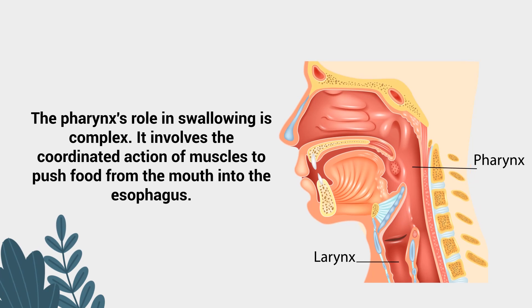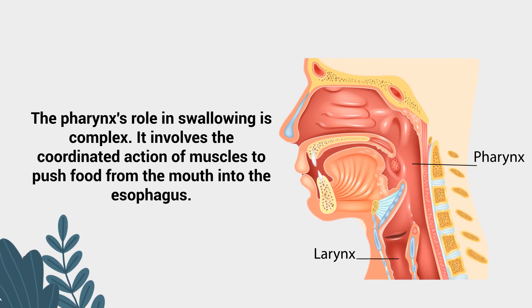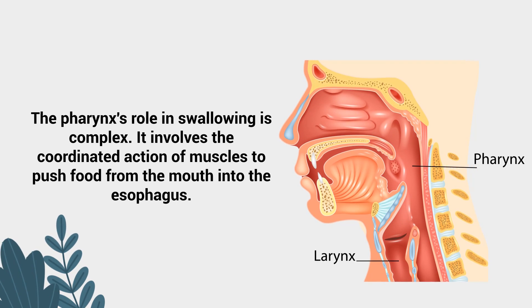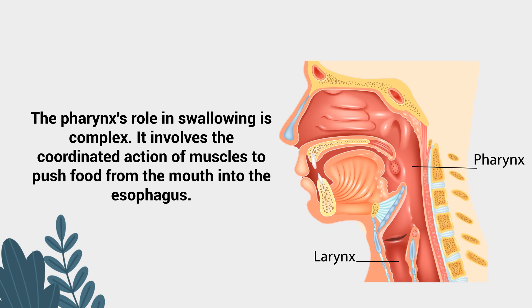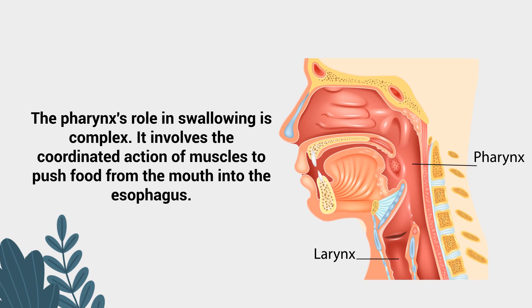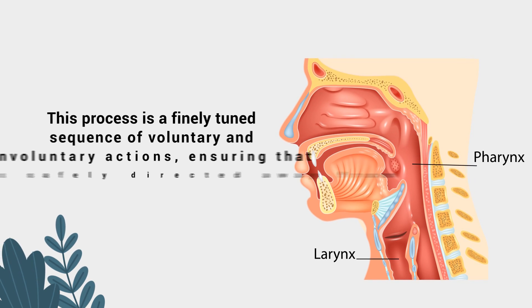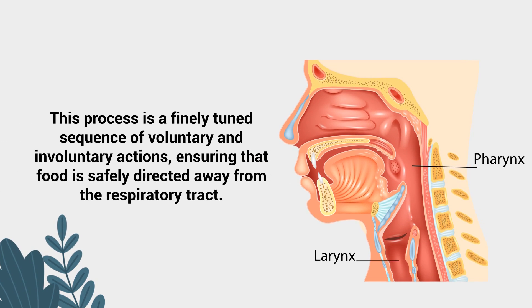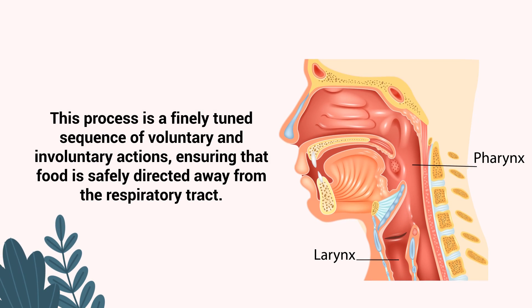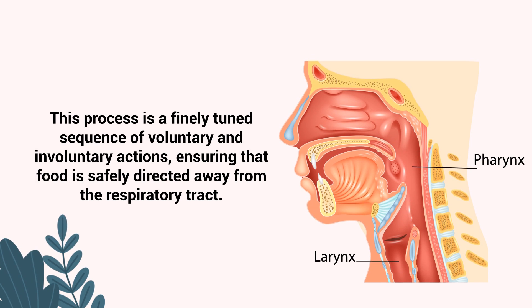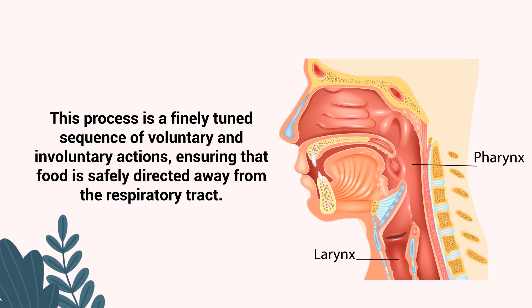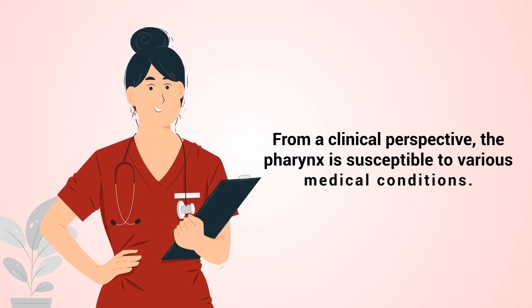The pharynx's role in swallowing is complex. It involves the coordinating action of muscles to push food from the mouth into the esophagus. This process is a finely tuned sequence of voluntary and involuntary actions, ensuring that food is safely directed away from the respiratory tract.